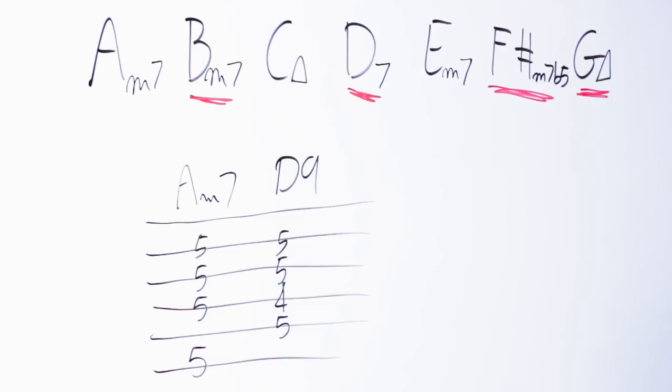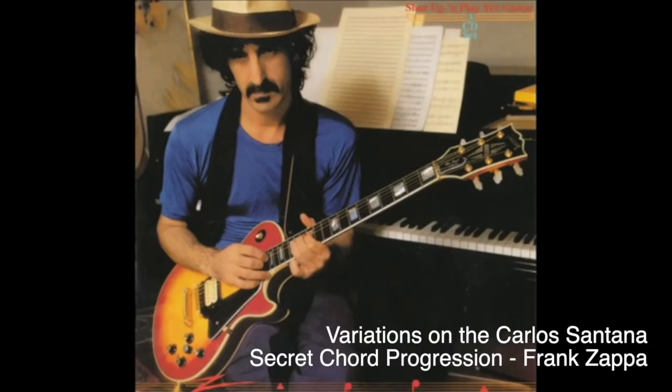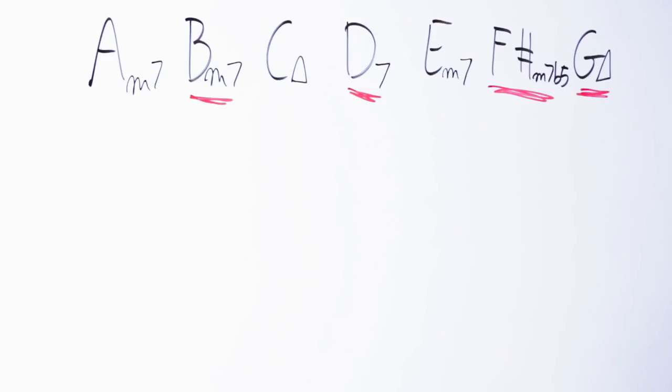Indeed, this last chord progression is so common and so cliché that we even have parody songs built on that. Now, to make sure that what we play sounds in Dorian and not in Aeolian, for instance, we need to use one of the three chords that are different between Aeolian and Dorian.